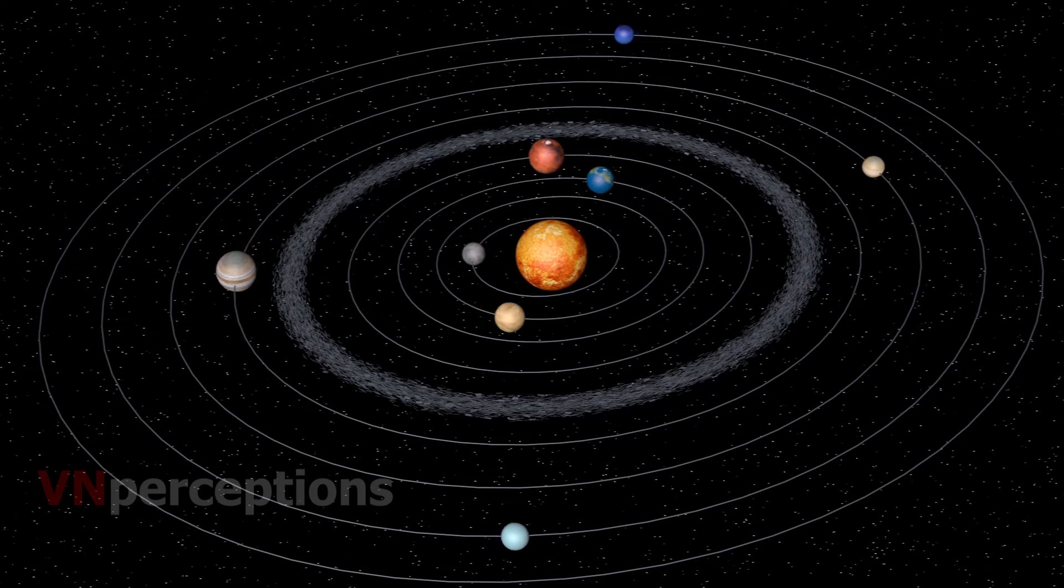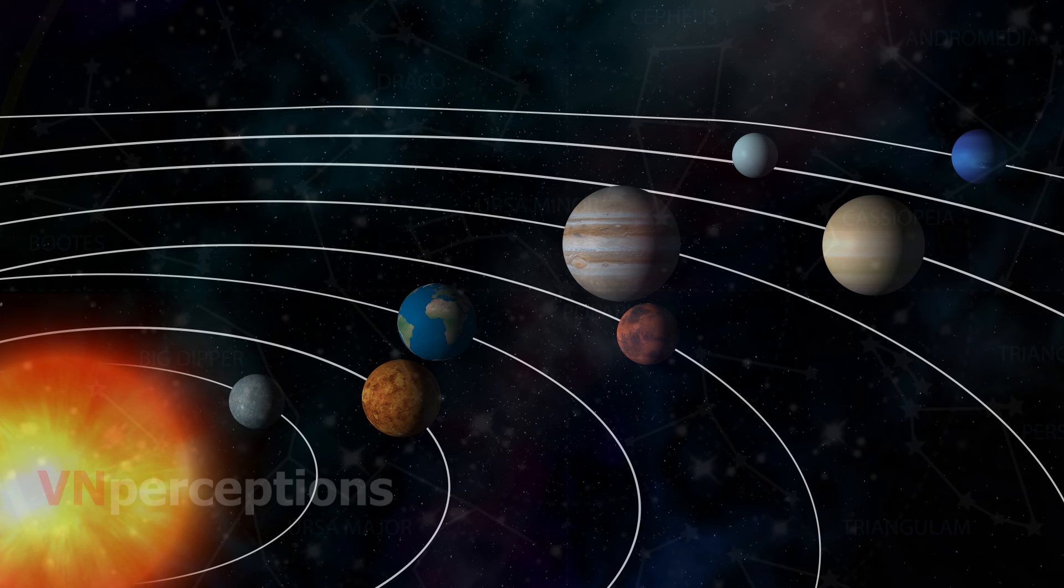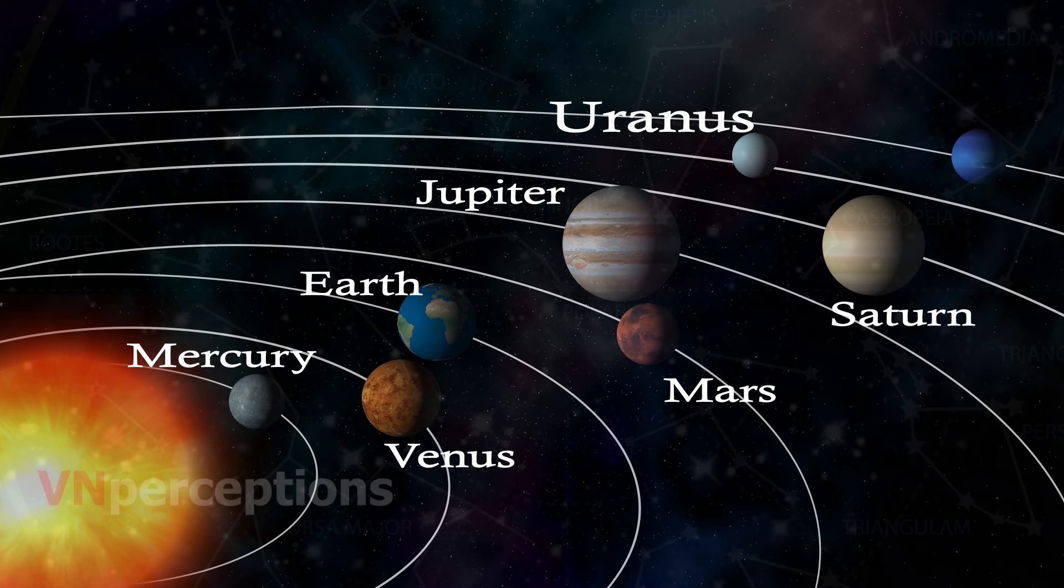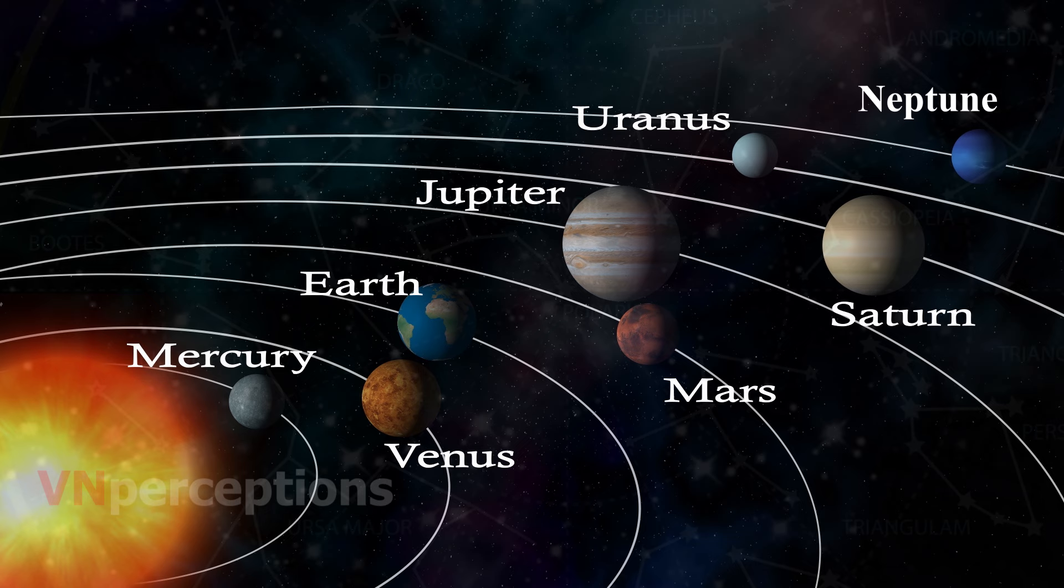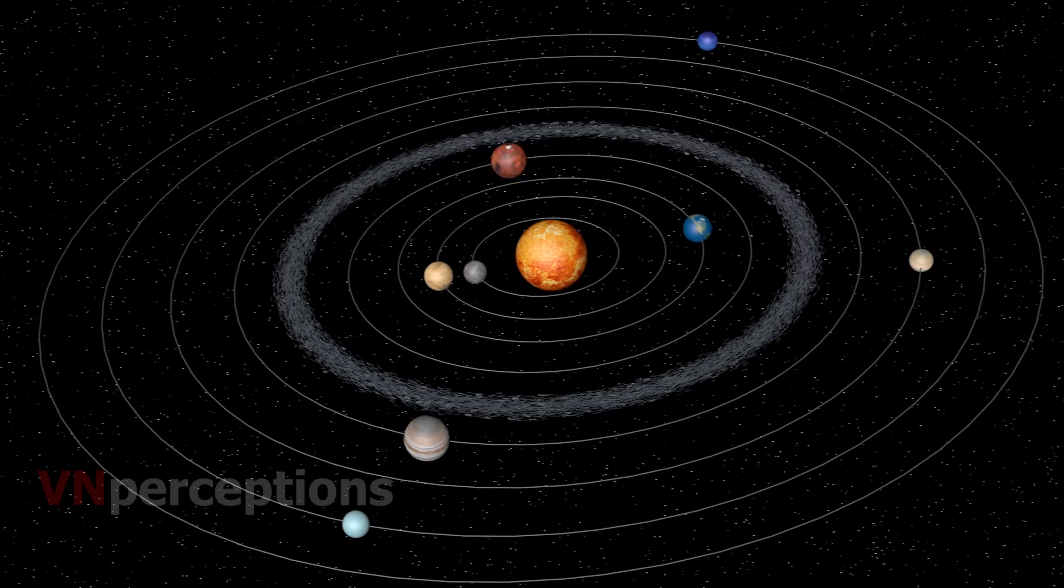There are seven other planets that revolve around the sun. The eight planets in their order of distance from the sun are Mercury, Venus, Earth, Mars, Jupiter, Saturn, Uranus and Neptune. All the eight planets of the solar system move around the sun in fixed paths. These paths are elongated.